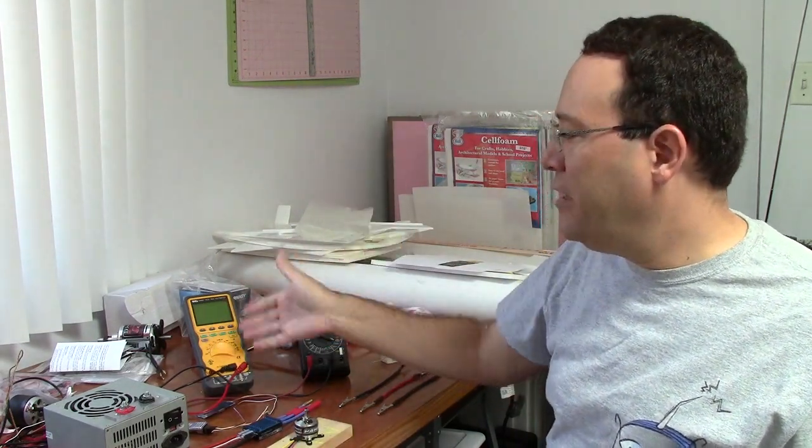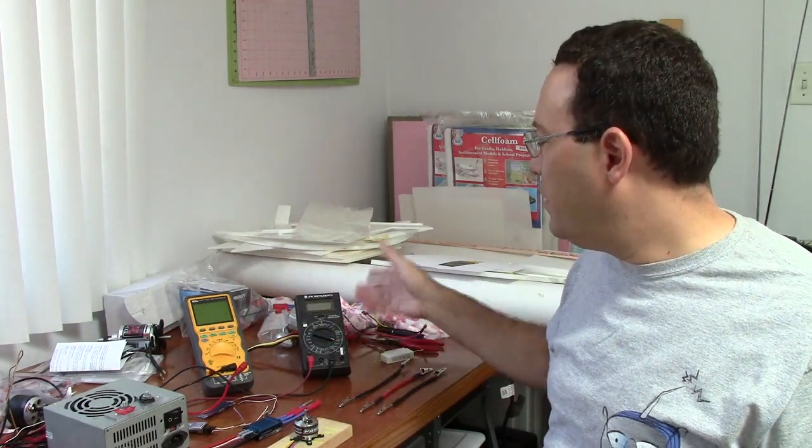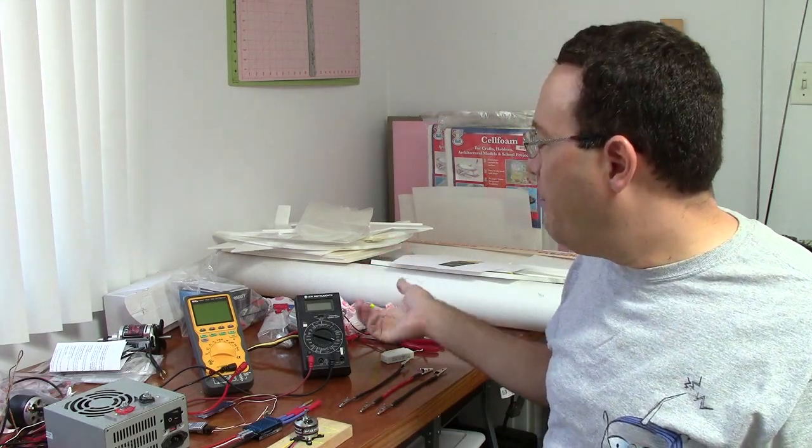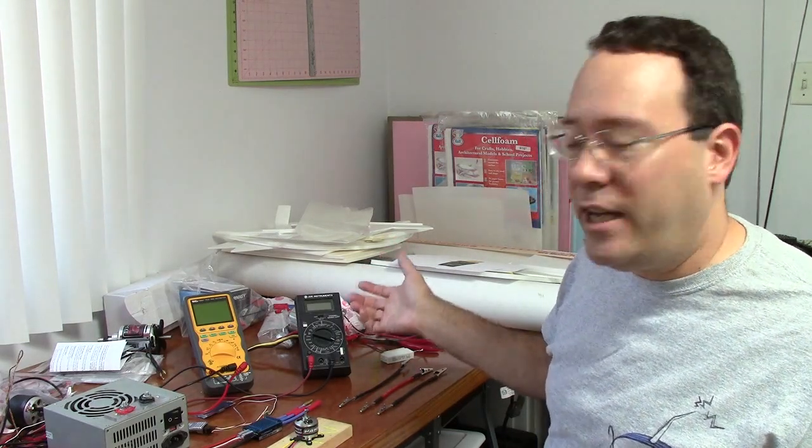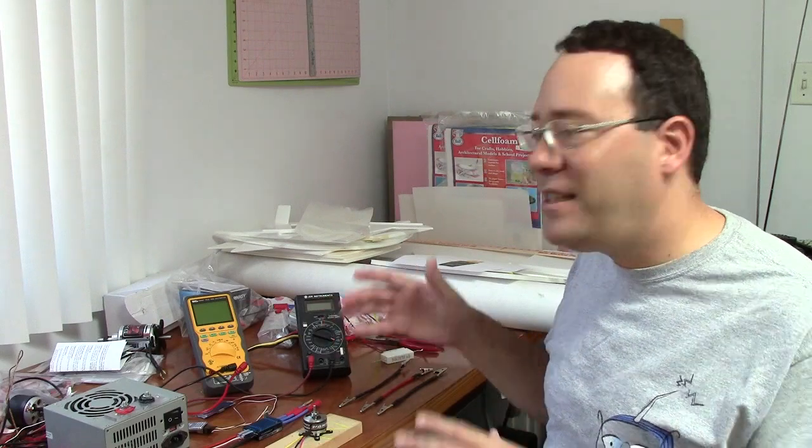But again, this is a $350 multimeter. This meter, which is about $50, it's not an RMS multimeter. So if you take a measurement of an AC circuit, which is what the motor is, it'll be very inaccurate and you probably won't even know about that. So that's the first caveat.